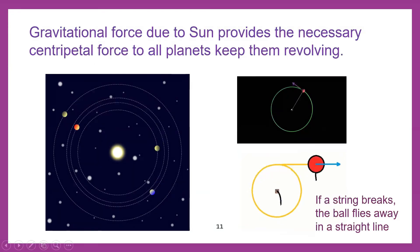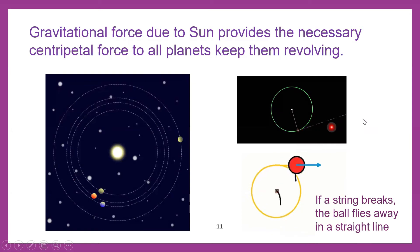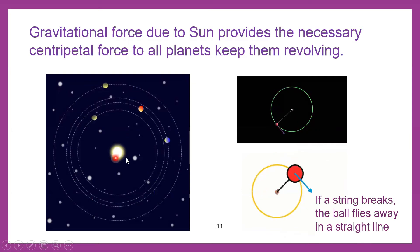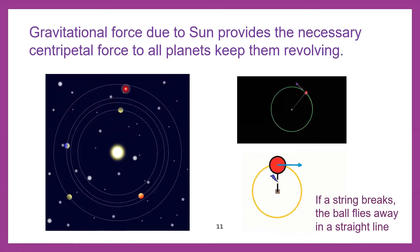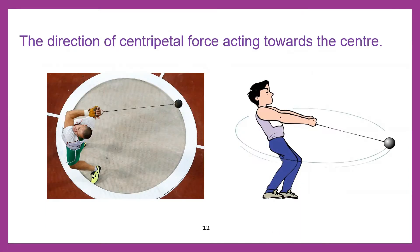If the sun stops providing centripetal force, Earth and other planets will fly away into outer space in a straight line. If the string breaks, the ball flies away in a straight line. Similarly, in the absence of the sun, these planets may fly into outer space.